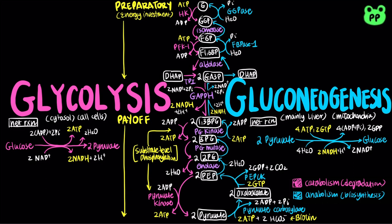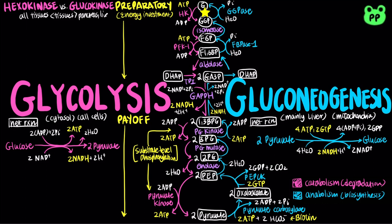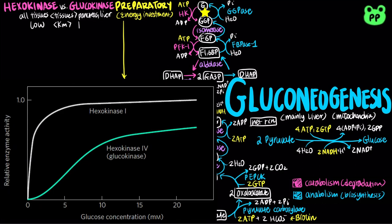Glycolysis and gluconeogenesis are reciprocally regulated at the three irreversible steps. The enzyme hexokinase has an isozyme called glucokinase found in the pancreas and liver, also known as hexokinase-4. Isozymes are different proteins that catalyze the same reaction. Glucokinase differs from hexokinase in three main ways. First, glucokinase has a higher Km than hexokinase. Km, the Michaelis-Menten constant, measures the substrate concentration required for effective catalysis. Higher Km means glucokinase requires higher glucose concentration for effective catalysis, and it binds more weakly to glucose, allowing glucose generated by gluconeogenesis in the liver to leave the cell before being trapped by phosphorylation.